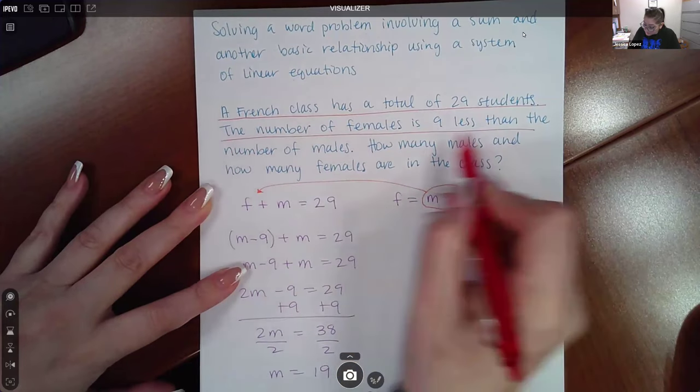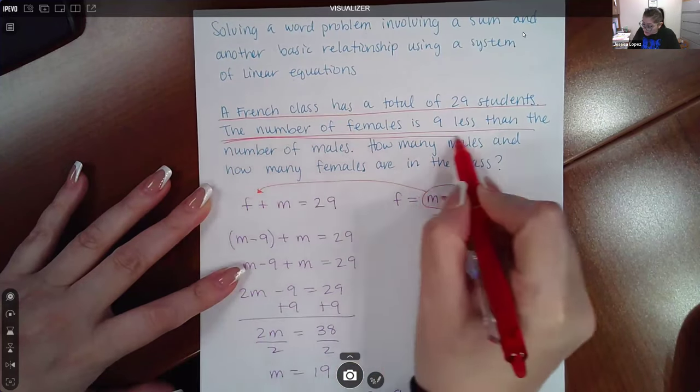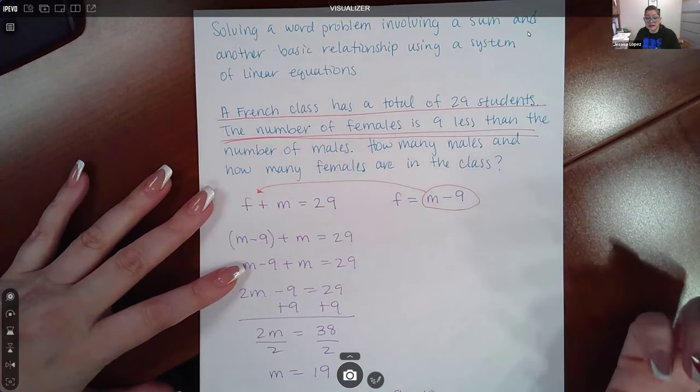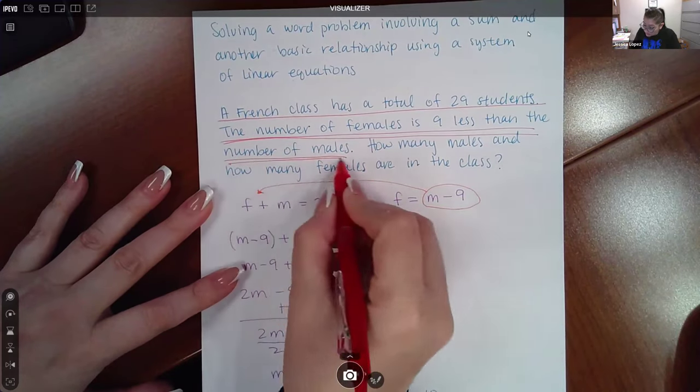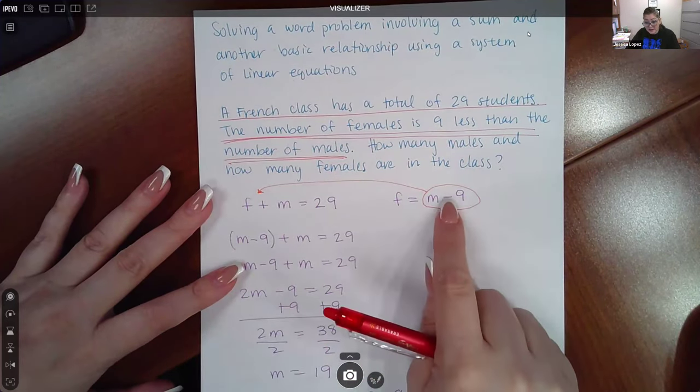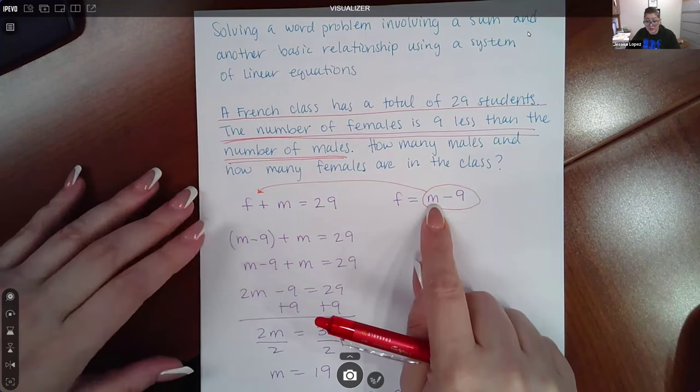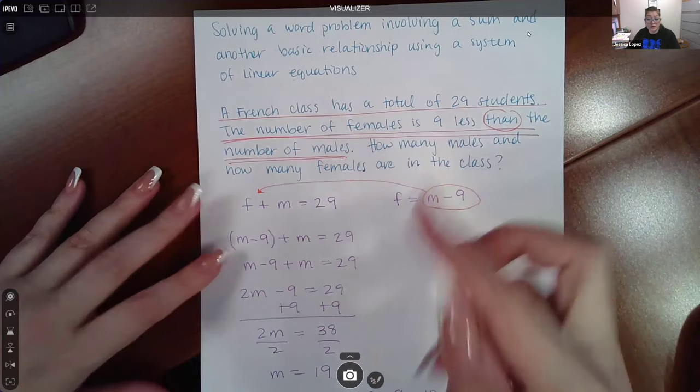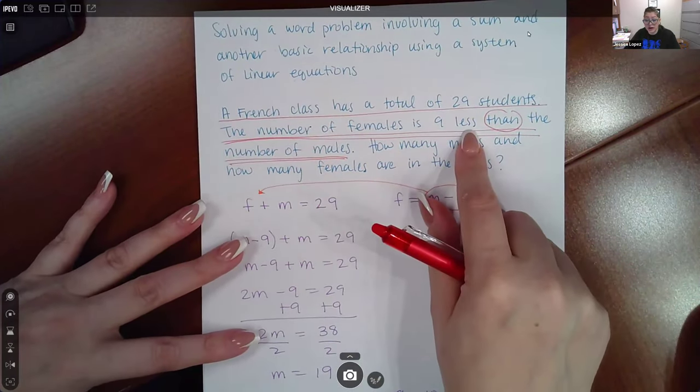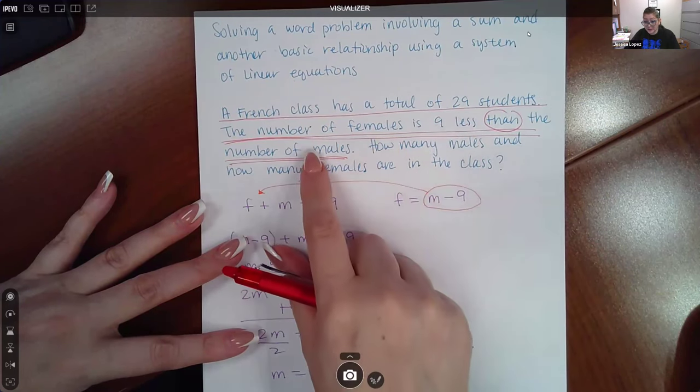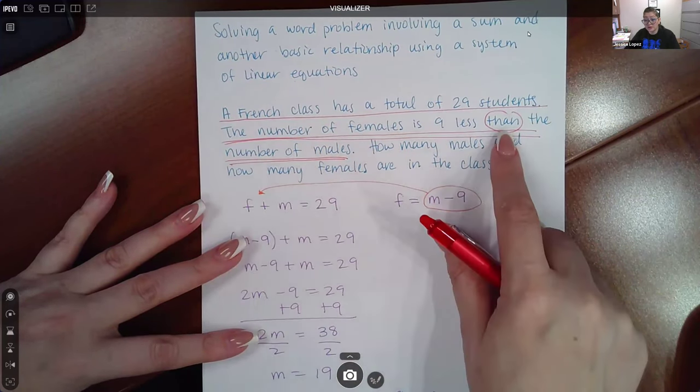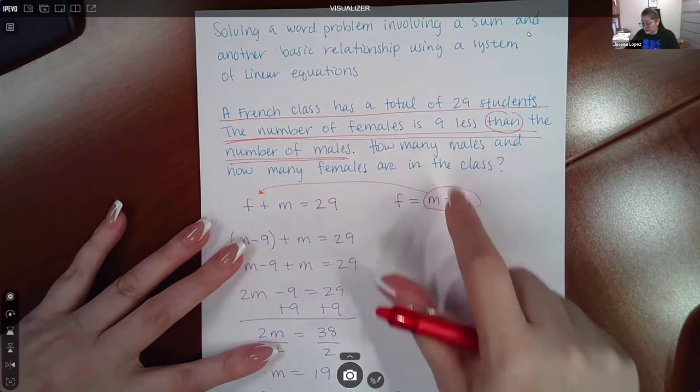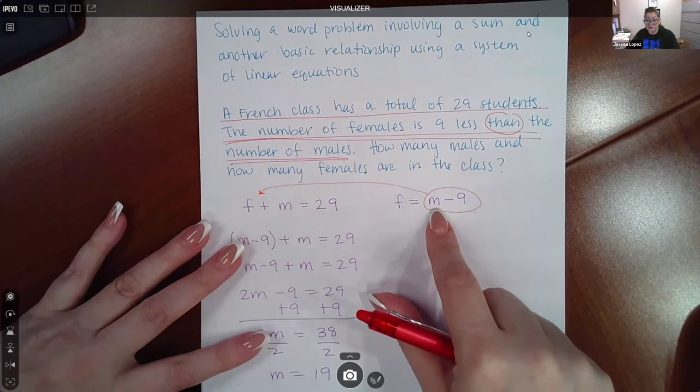The second sentence gives us another equation. It says the number of females is 9 less than the number of males. Therefore, the females is 9 less than the number of males. Remember whenever you use the word then it swaps the order around that word. We know less means subtract, but it's not 9 subtract M. Because of the word then, it's actually M subtract 9. This is how you say 9 less than the number of males.